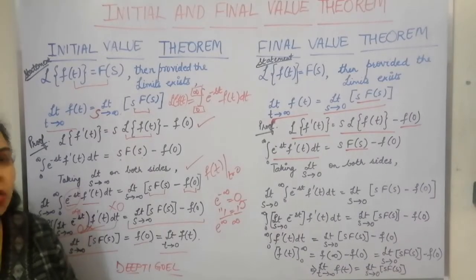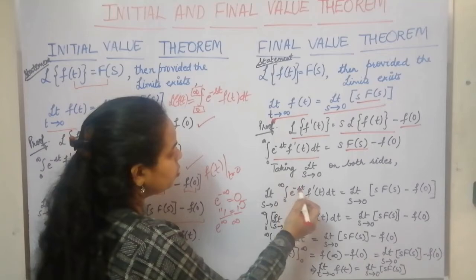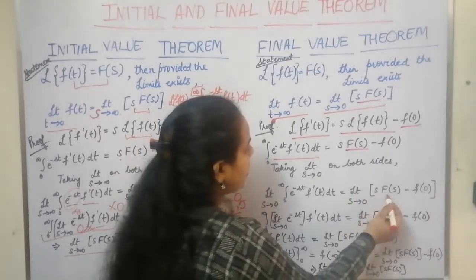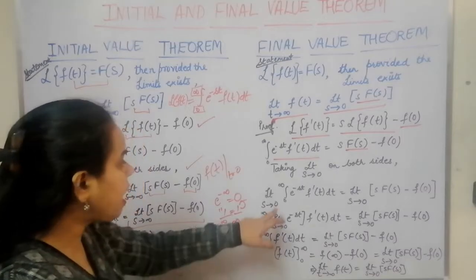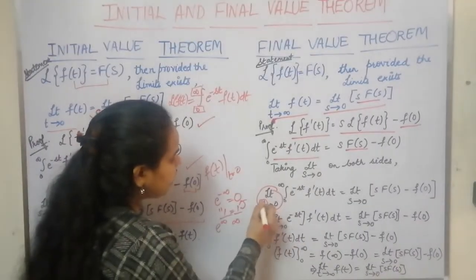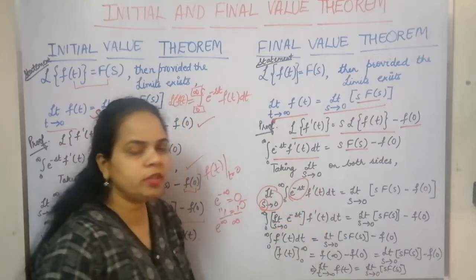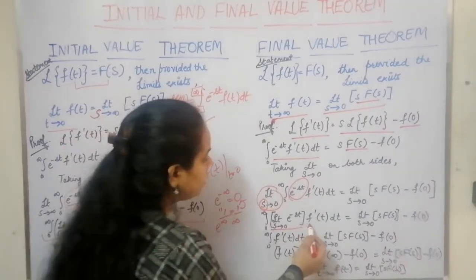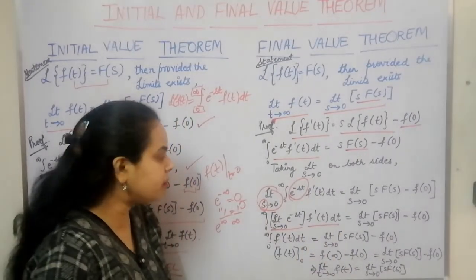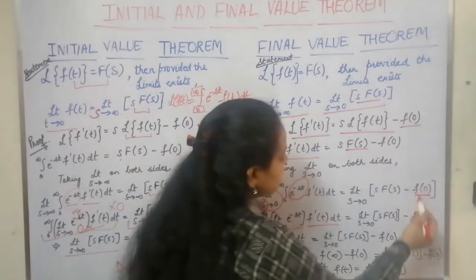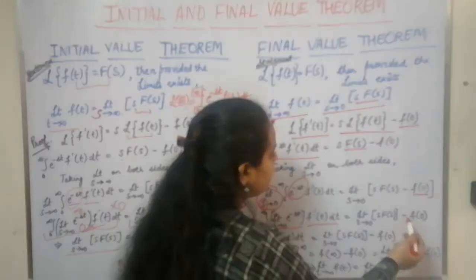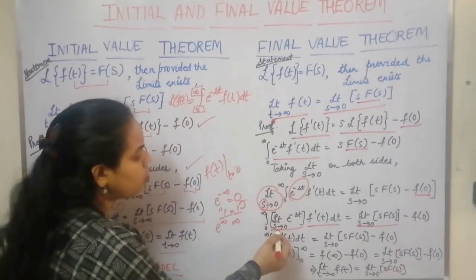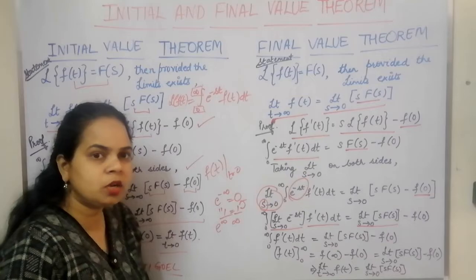Applying the limit s→0 on both sides, we have: limit s→0 of the integral from 0 to infinity of e^(−st)·f'(t) dt, which equals limit s→0 of [s·F(s) − f(0)]. Again, since we apply the limit on variable s, and s is only associated with the exponential term e^(−st), we associate the limit with e^(−st), while f'(t) dt is outside the limit bracket. Also, f(0) does not contain s, so it is independent of the limit, and the limit s→0 applies only to s·F(s).